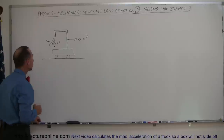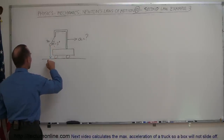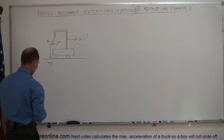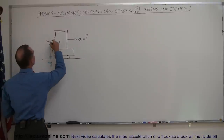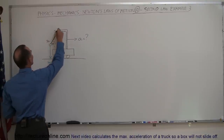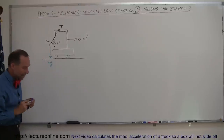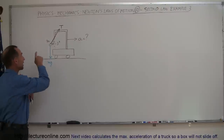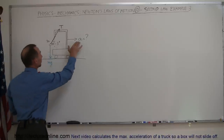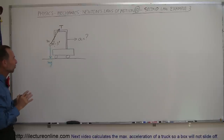First, we have the force of gravity pulling down, which is mg — the weight of the object. Then we have the tension of the string pulling off to the side. Those are the only two forces acting on that ball, and because it's accelerating, there is going to be a net force — not all forces will be canceling out.